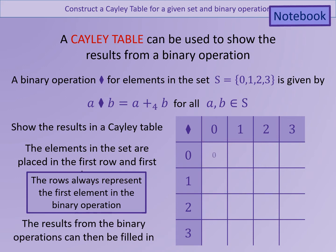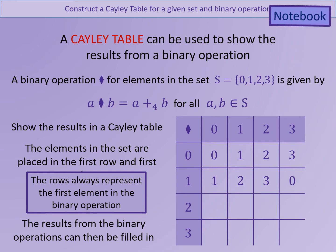The results are as follows. Remember that for addition mod 4, when the answer is 4 or above, it needs to be reduced. For example, 1 plus 3 gives an answer of 0 mod 4. So all of the answers in this case will be between 0 and 3.